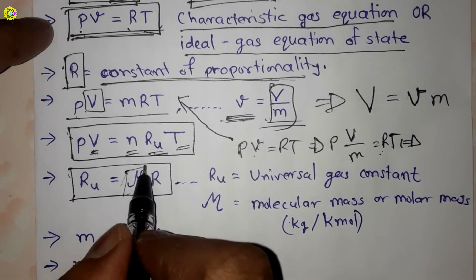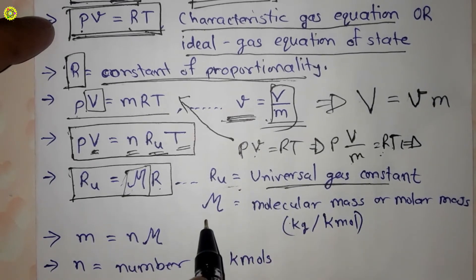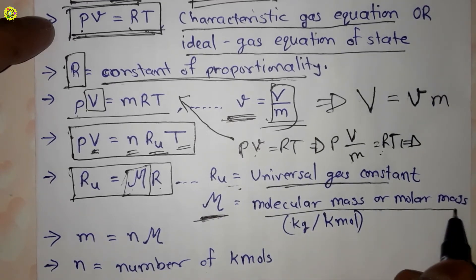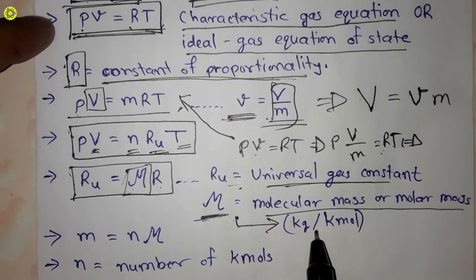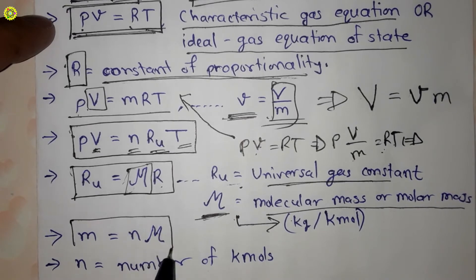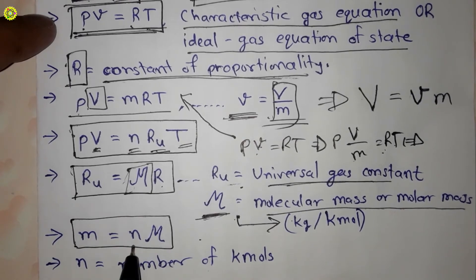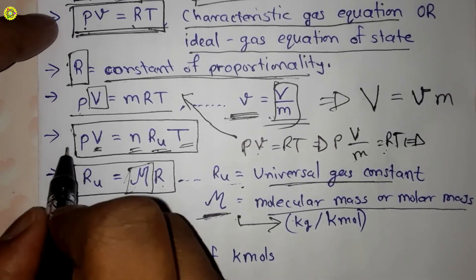The universal gas constant Ru equals molecular mass M-bar multiplied by R, where R is the specific gas constant. This M-bar is called the molecular mass or molar mass, and its unit is kg per kilo-mole. Also, mass m equals n times molecular mass M-bar, where n is the number of moles.